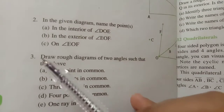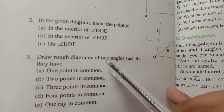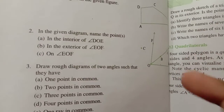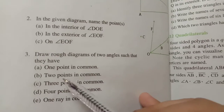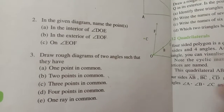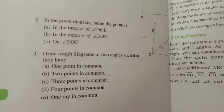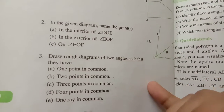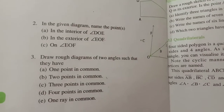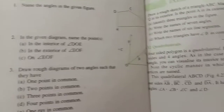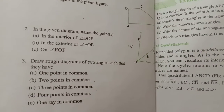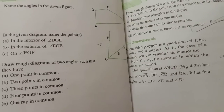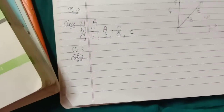Now in question 3b, you have to draw a rough diagram of two angles such that they have one point in common, two points in common, three points in common, four points in common, and one ray in common. The first one is one point in common. How will we draw two angles with one point in common?